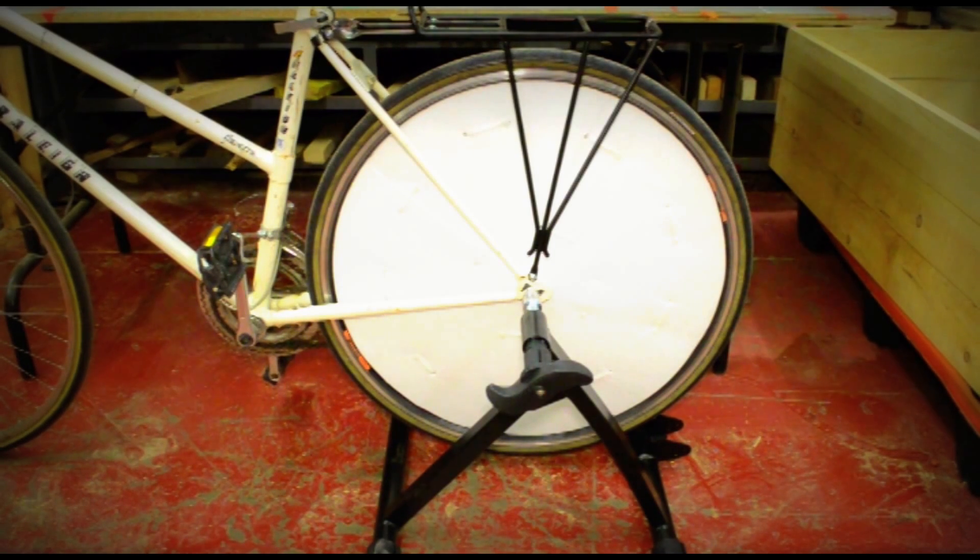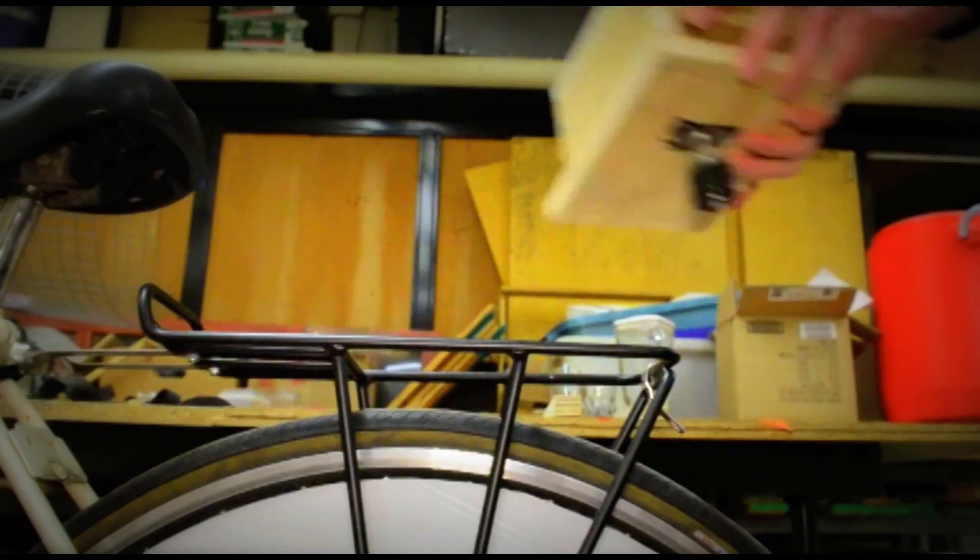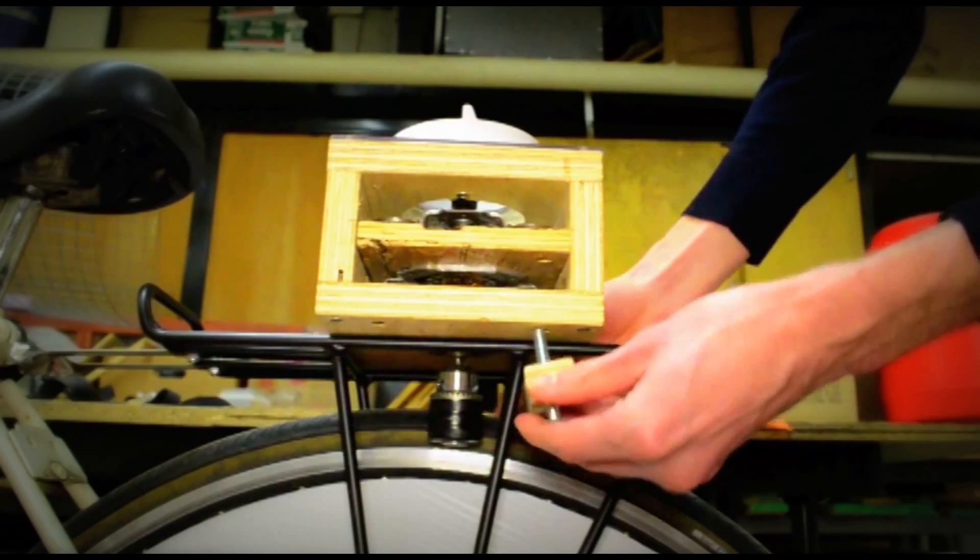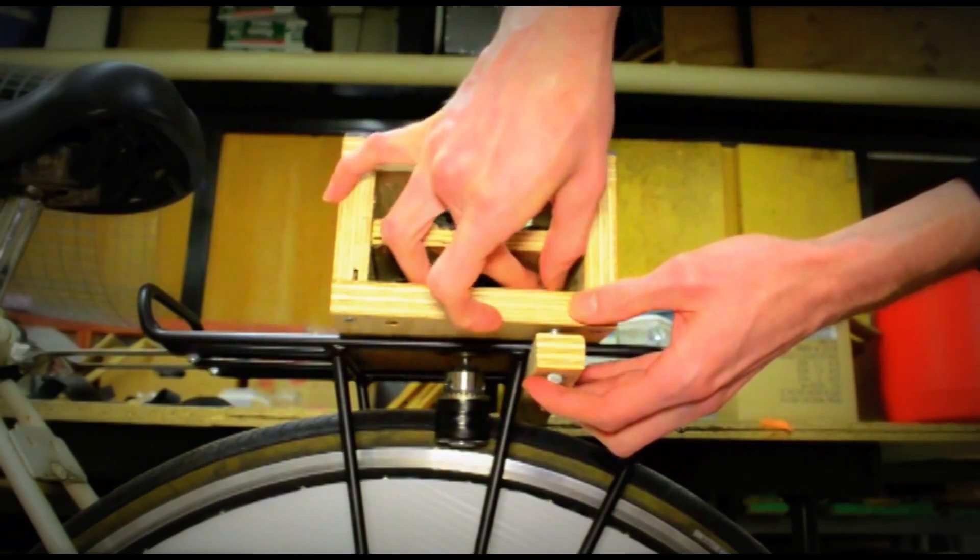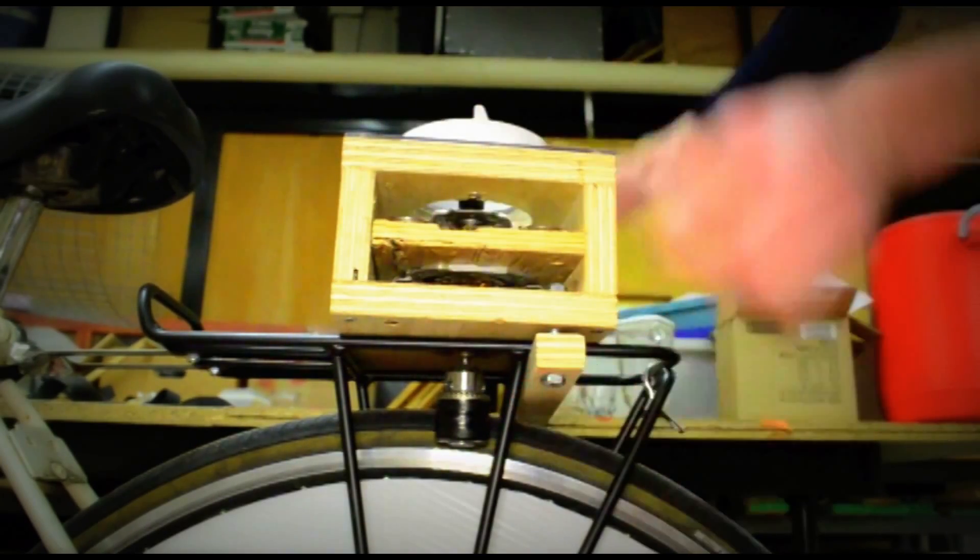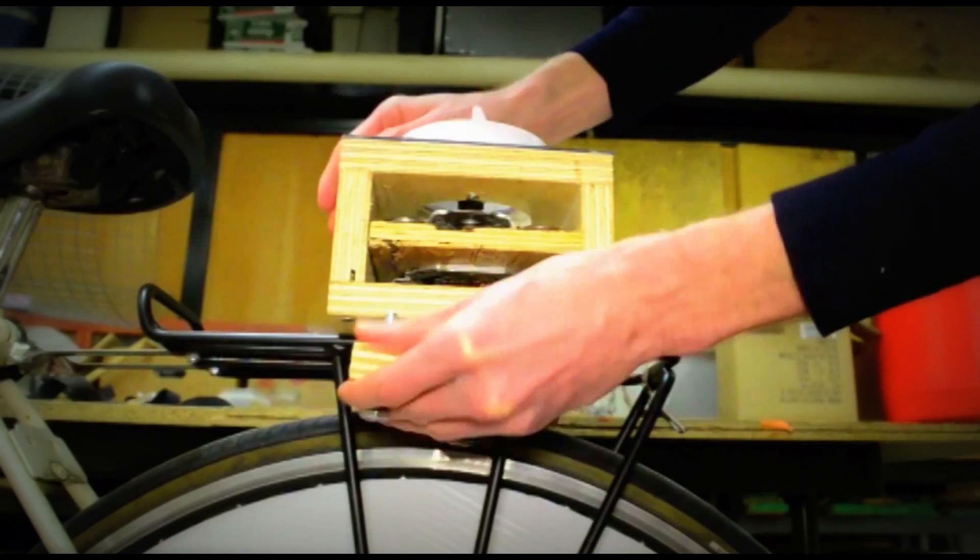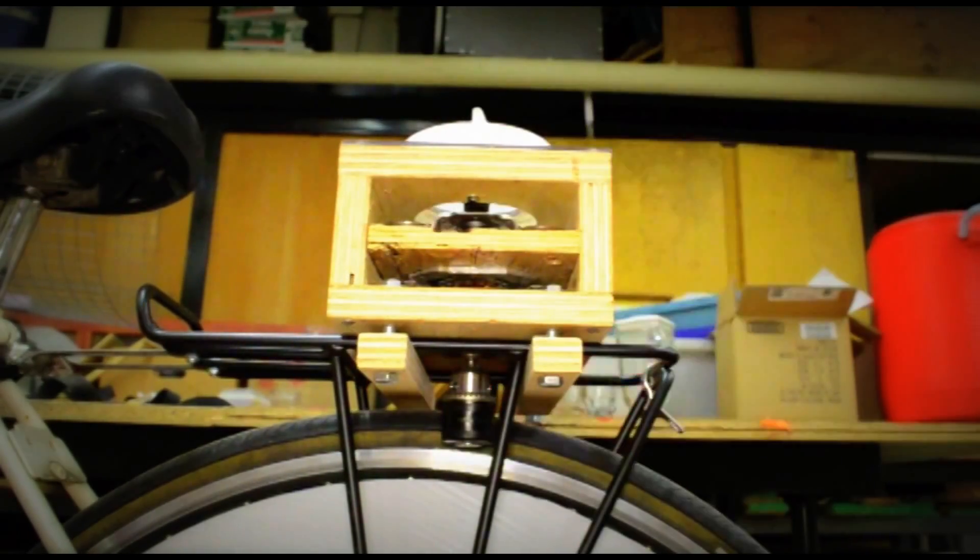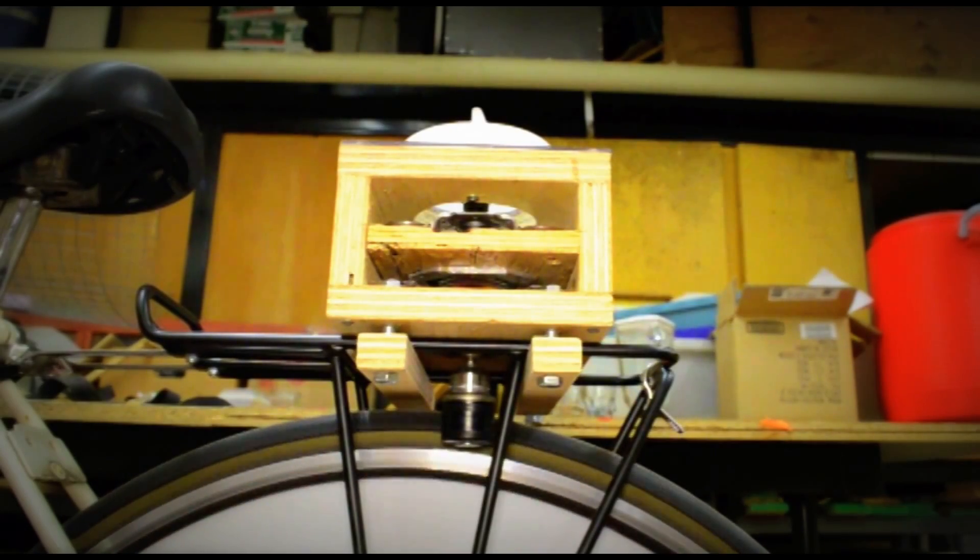Mount the bicycle in the training stand and attach the rack to the rear of the bicycle. Once the glue has cured, mount the blender base on the rack with the drill chuck pressed up against the left sidewall of the tire. Attach the box to the rack by fastening the braces with the bolts and nuts, clamping the bike rack between the box and the braces. Test the blender by cranking a pedal slowly and watching to make sure that the chuck is spinning.